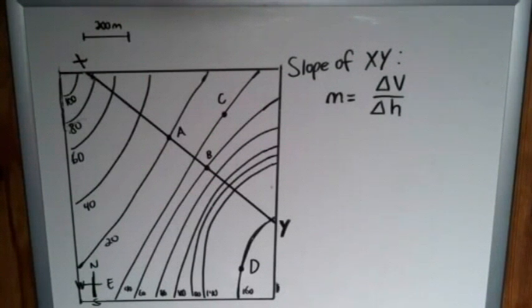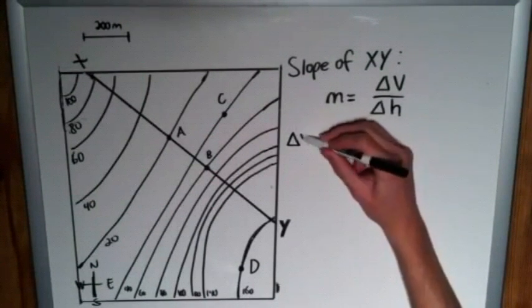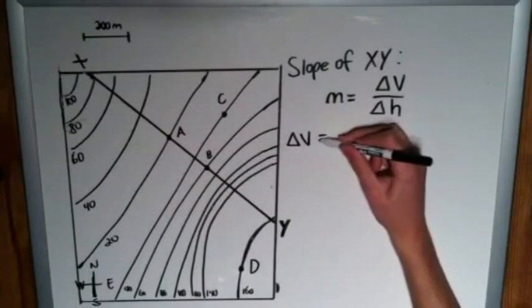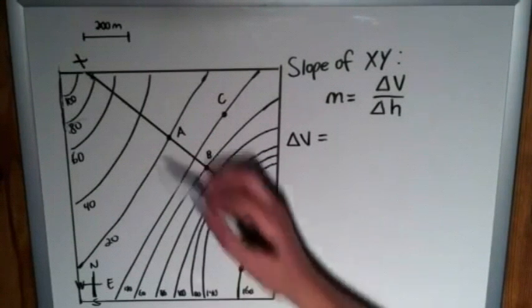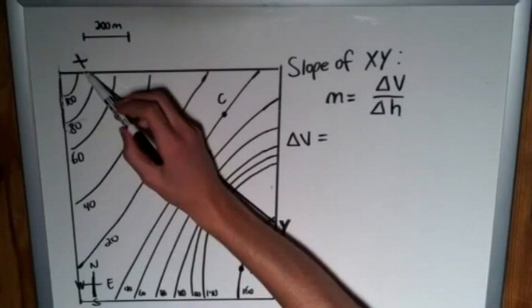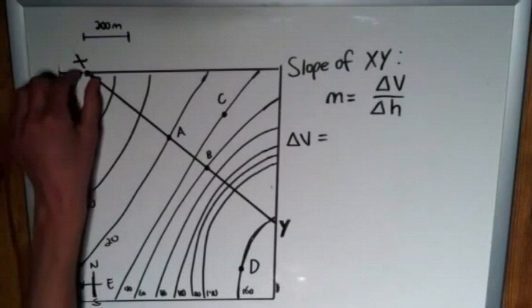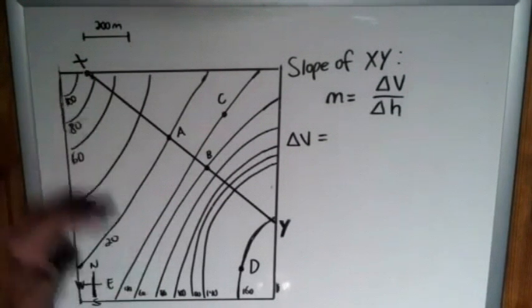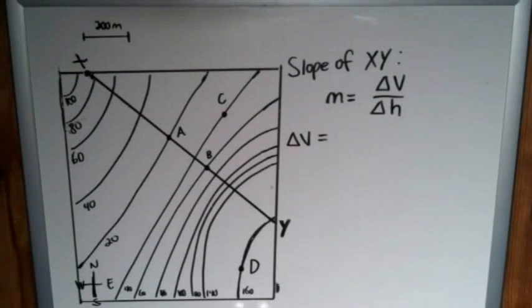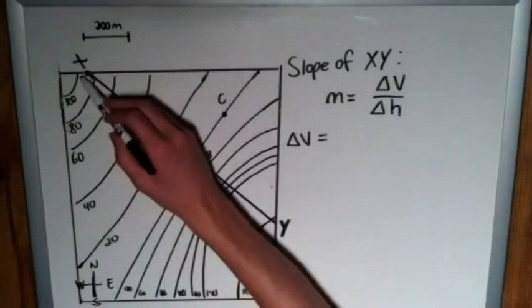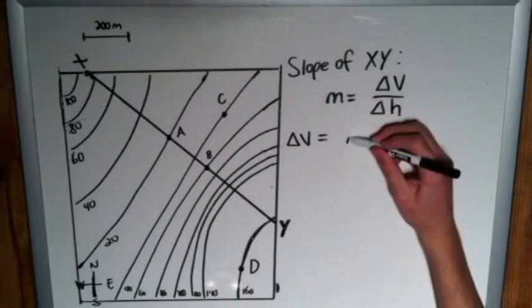Well given that equation, we can jump right in and first start with the easier one we can get just by reading this map on its own, which is delta V. We have X and Y, and X appears to be somewhere starting between the 80 and 100 contour line. In fact, it appears to be halfway between the two in terms of its distance. Obviously we don't know the exact position. If you were that determined in a real life situation, you could actually find that exact point on the map, go there and take measurements for how high you are above sea level.